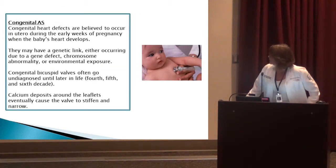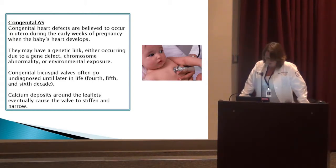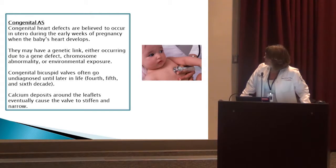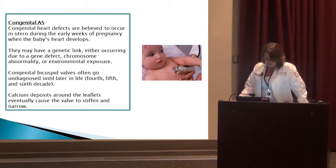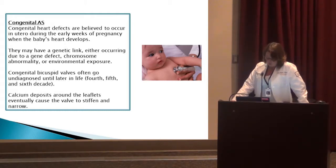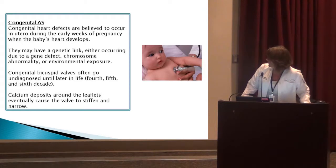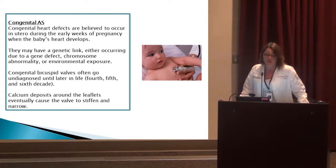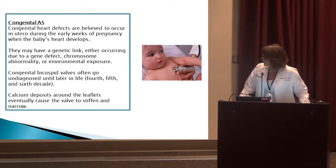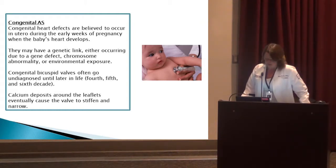Congenital heart defects are believed to occur in utero during the early weeks of pregnancy when the baby's heart develops. There may be a genetic link — either a gene defect, chromosome abnormality, or environmental exposure. Congenital bicuspid valves are the most common and usually cause problems later in life, in the fourth, fifth, and sixth decades, when calcium deposits around the leaflets cause the valve to stiffen and narrow.